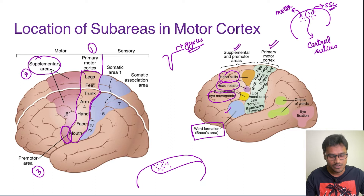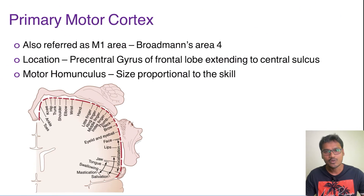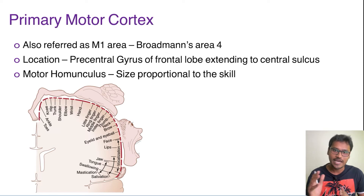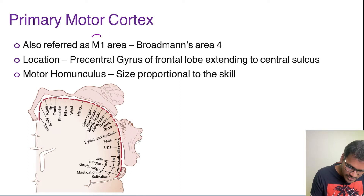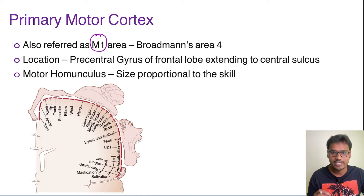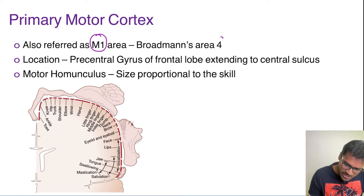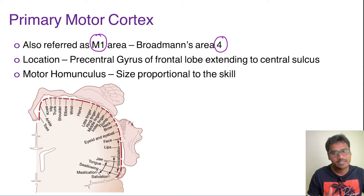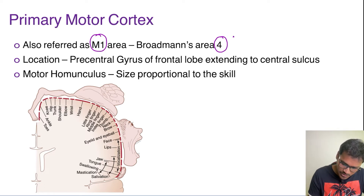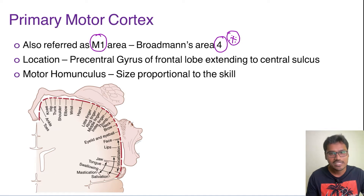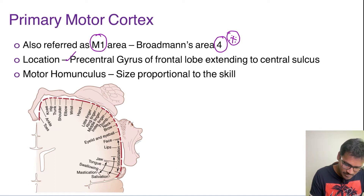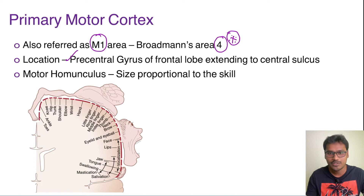The role of the primary motor cortex is to perform actions by sending the descending tracts. This area is also referred to as M1, and it comes under Brodmann's area 4. Its location is in the precentral gyrus, extending up to the central sulcus.